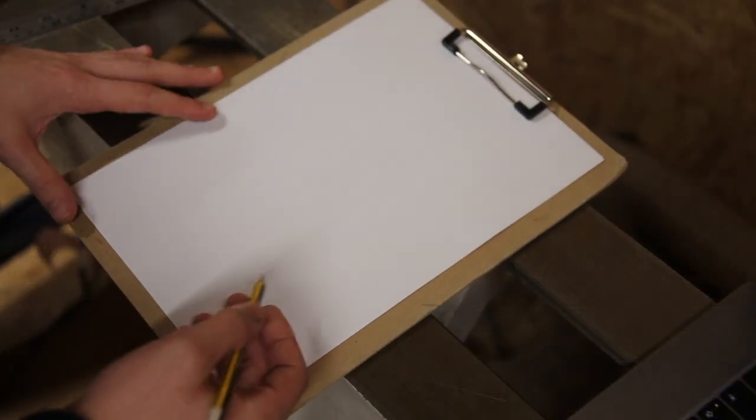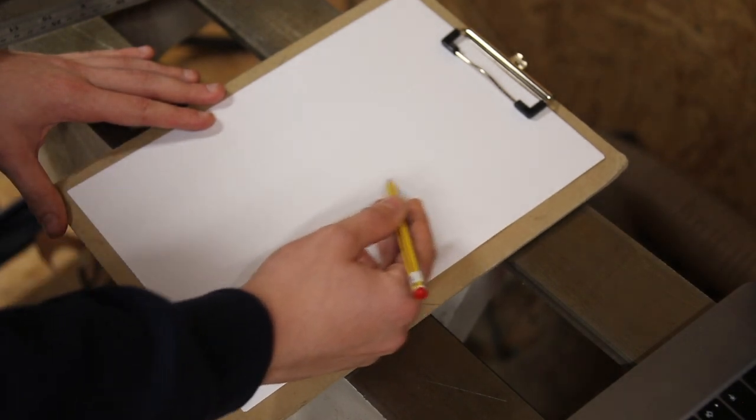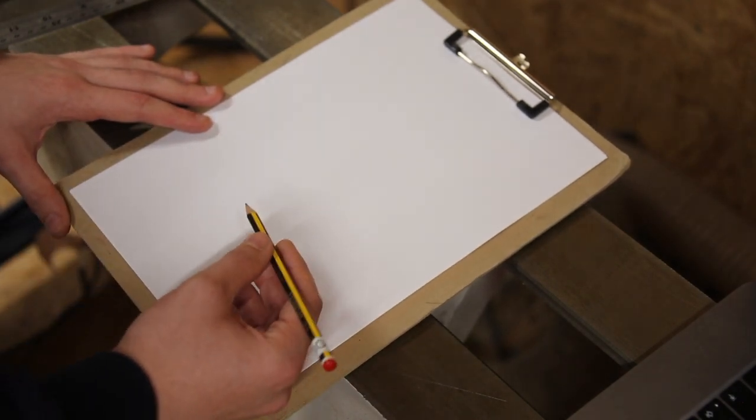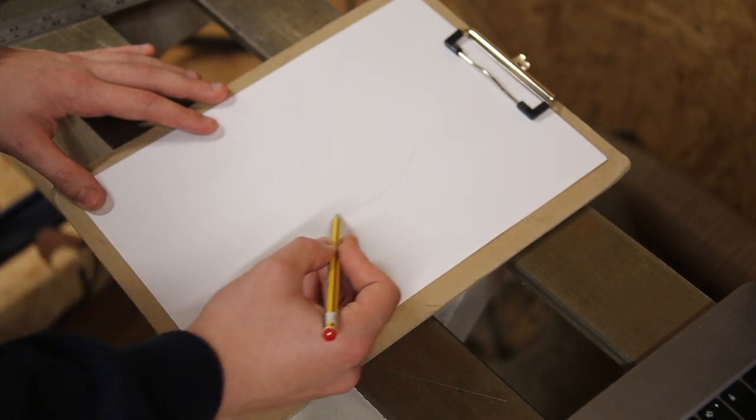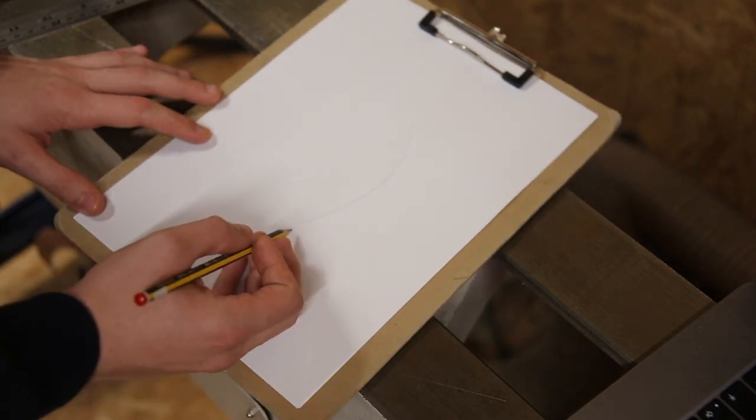The first step is to grab a pencil and we want to draw a rough cross-section of the vase we want to make on the piece of paper. That's quite nice, I think I'll go with that.